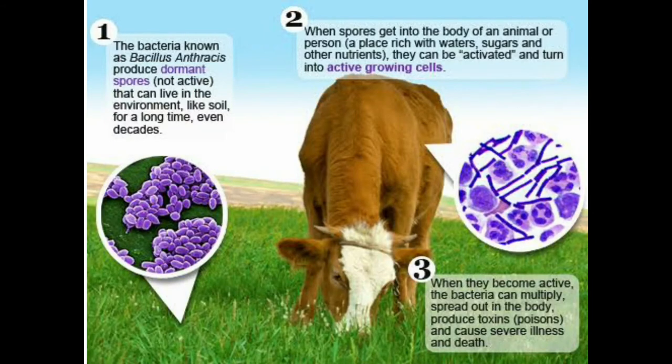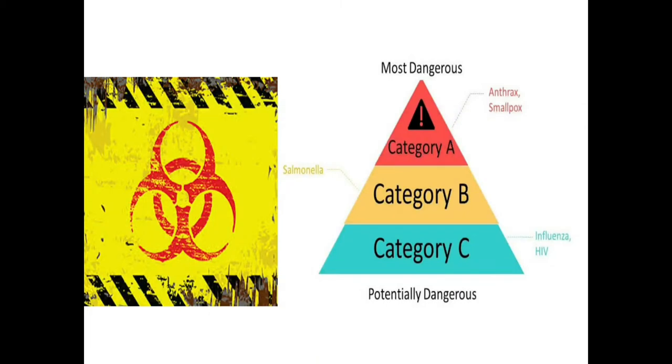Cattle and sheep with anthrax generally die suddenly. Just before death, animals may show signs of high fever, and blood may be present around the nose and mouth. To prevent a large-scale anthrax incident, it is critically important that carcasses of cattle and sheep that die suddenly without any obvious cause are tested for anthrax before they are moved. This reduces the risk of human exposure and minimizes contamination of the affected property.